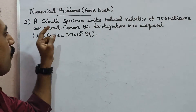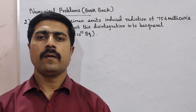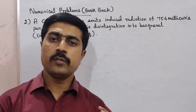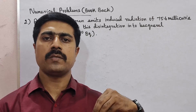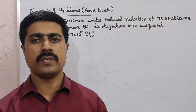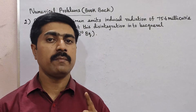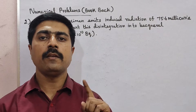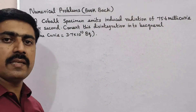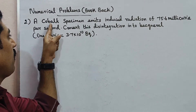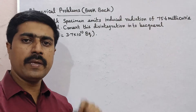This is a cobalt specimen. It is a natural radioactive substance. The condition is atomic number greater than 82, but cobalt has a smaller atomic number — less than 82.